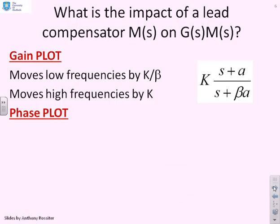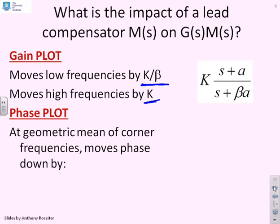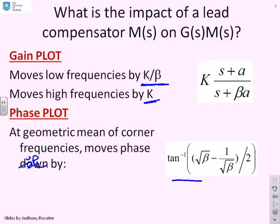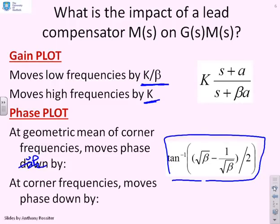Let's remind ourselves of the key characteristics of a lead compensator. We know it moves the low frequencies by k/β and the high frequencies by k. In terms of the phase, at the geometric mean of the corner frequencies the phase moves up, using the formula arctan((√β − 1/√β)/2). And at the corner frequencies, the phase moves up by 45 − arctan(1/β) degrees.